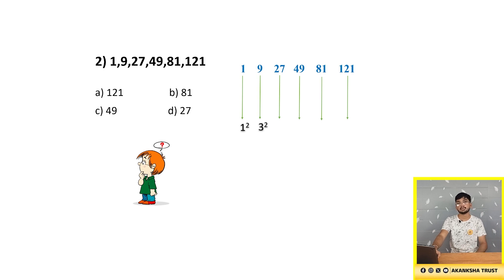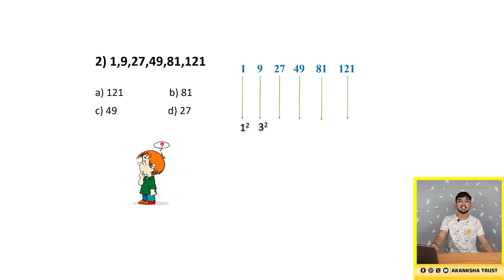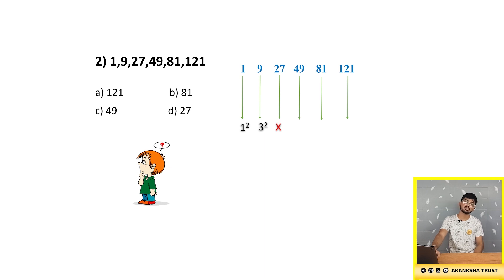The first number is 1, which is 1 squared. Here we are calculating the squares of odd numbers. 3 squared is 9, which is the second number. The next number must be 5 squared: 5×5 = 25, but the number given is 27. It is wrong, so the wrong number in the sequence is 27.